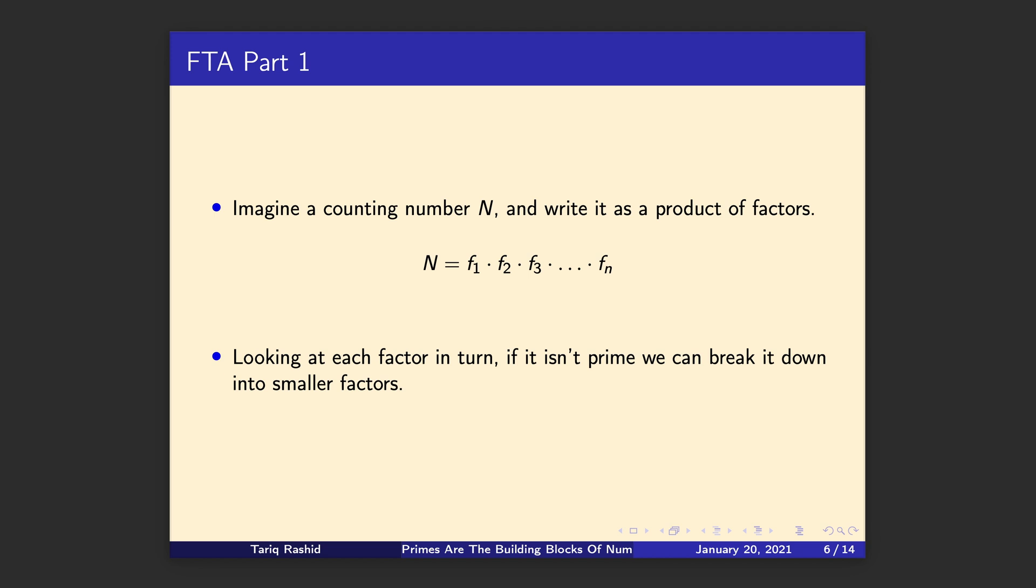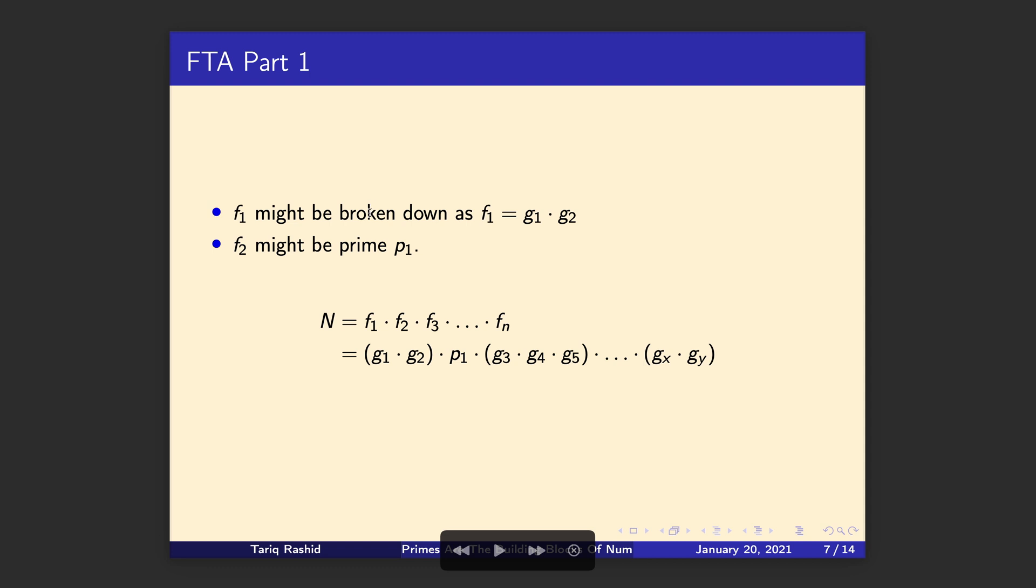So imagine we have a counting number N, more than one, and write it as a product of factors. Just imagine that they are f₁, f₂, f₃, factor 1, factor 2, factor 3, up to factor n. It doesn't matter what they actually are. It could be 12 is 3 times 4, something like that. Now what we can do is we can look at each factor and try and break it down. If we can't break it down, it's a prime.